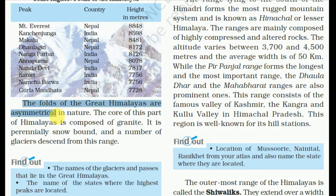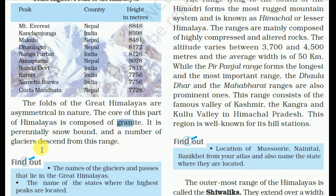The folds of the Great Himalaya are asymmetrical in nature. The core of this part of the Himalaya is composed of granite — this is a very important fact. It is perennially snow-bound and a number of glaciers descend from this range.